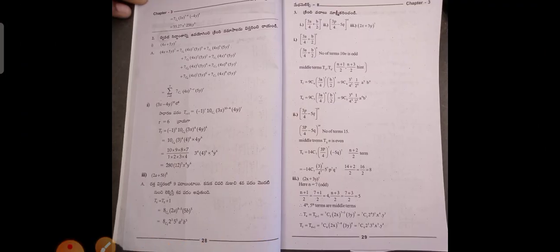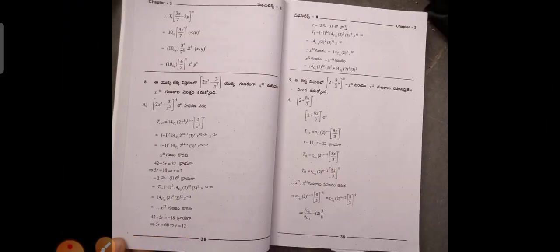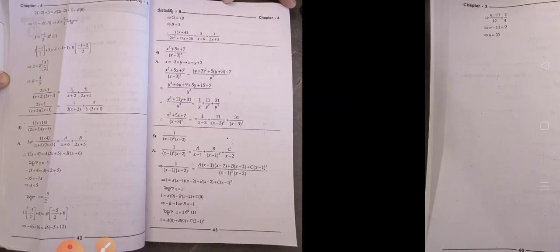Next, Dvipadha Siddhanta — Binomial Theorem, chapter three. Partial Fractions, chapter four.